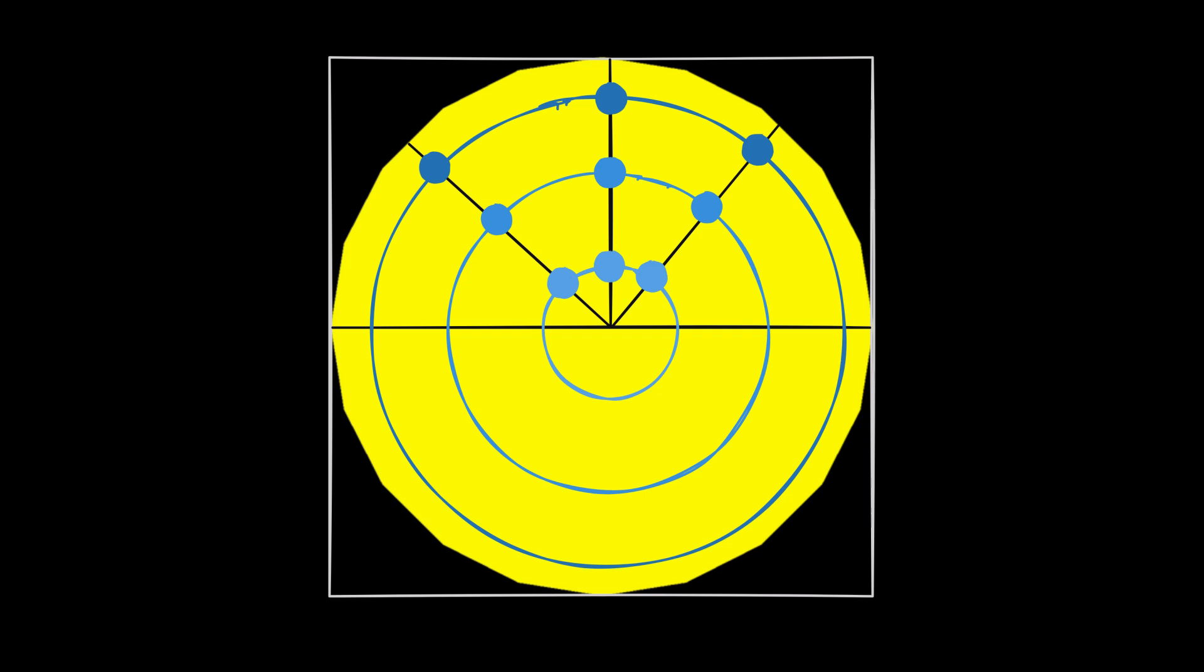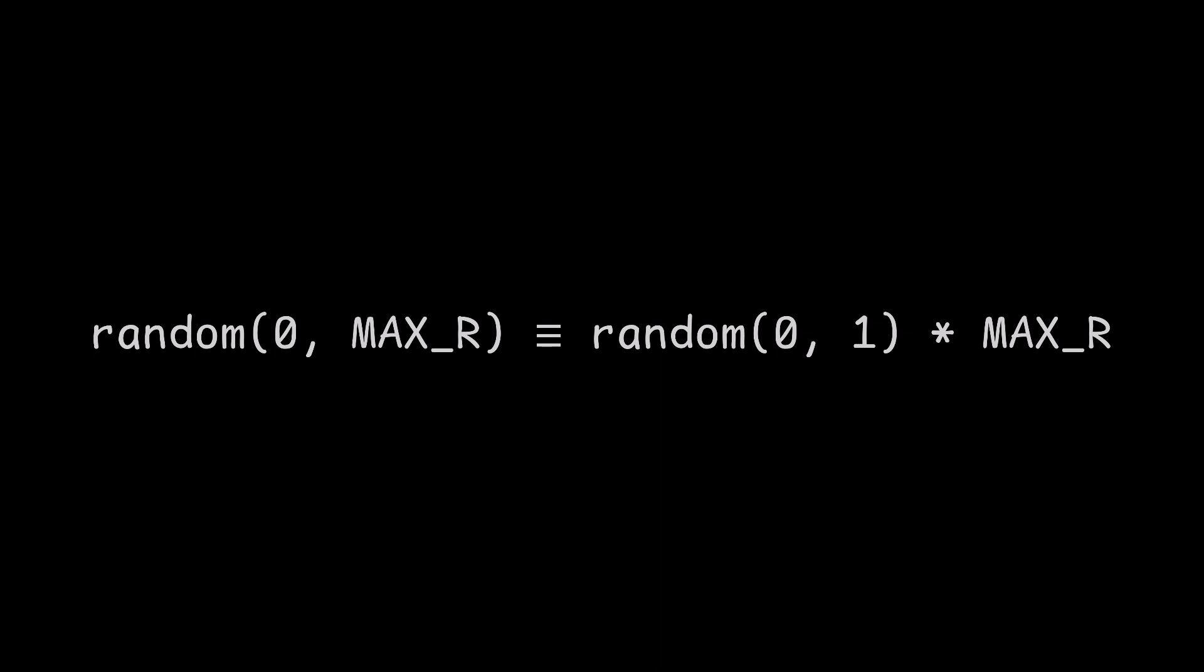Now that we've settled that this isn't some sort of mistake, we have to find a way around this limitation. First let's notice that picking a random radius between 0 and max r is the same as taking a random part of max r between 0 and 1. Why not experiment with the way of choosing a random part?